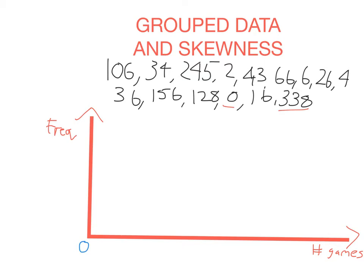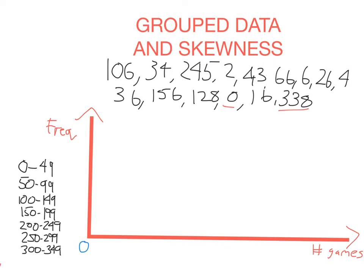So what we're going to do is group the data. I'm going to group it in groups of 50 — what I mean is I'm going to group together all of the scores so that each group has a length of 50. So the first group is 0 to 49, the next group will be 50 to 99, and so on. There's nothing magical about a group length of 50. I could have had a class interval of 20 — from 0 to 19, 20 to 39 and so on. I'd have more groups that way, but it might make the data a little more useful.